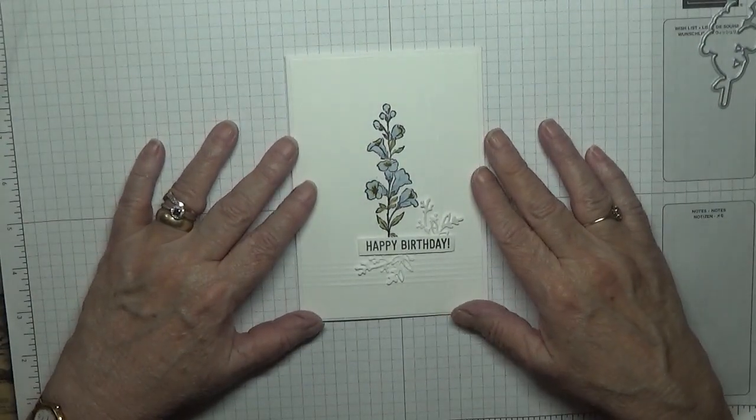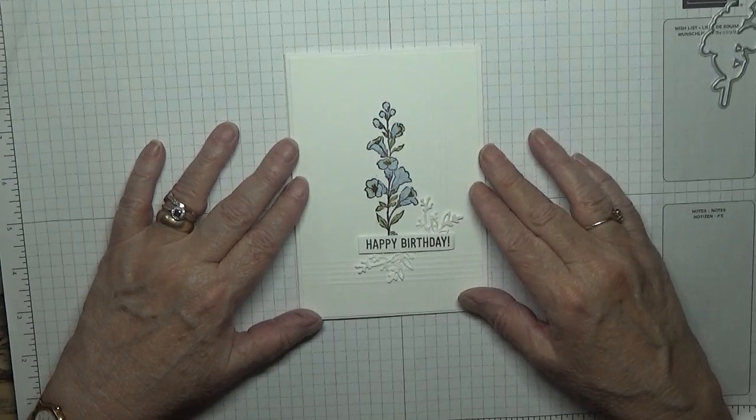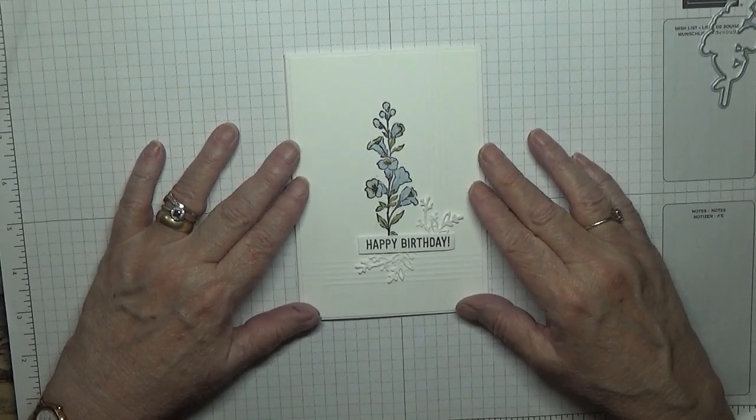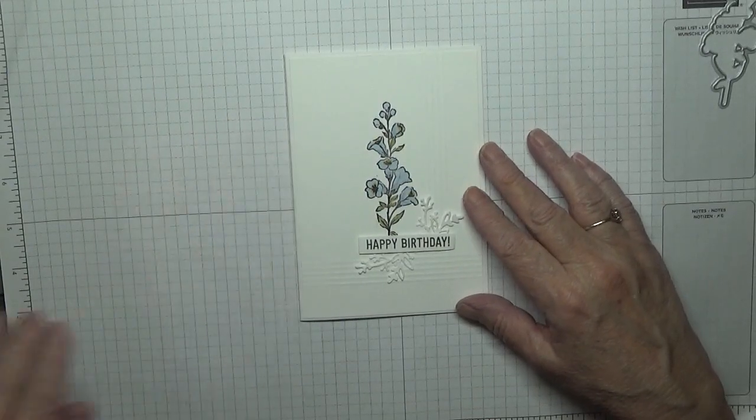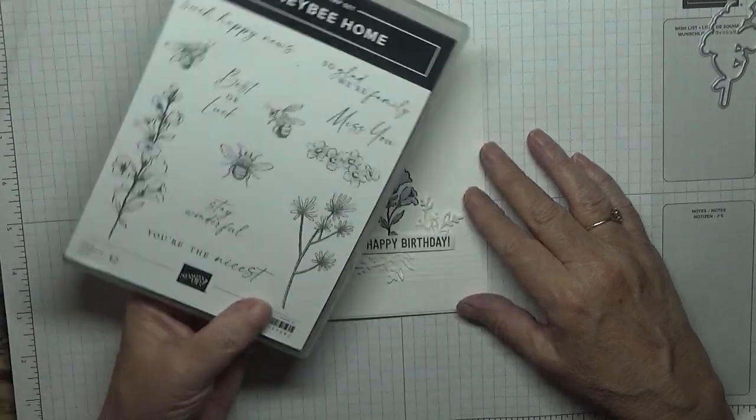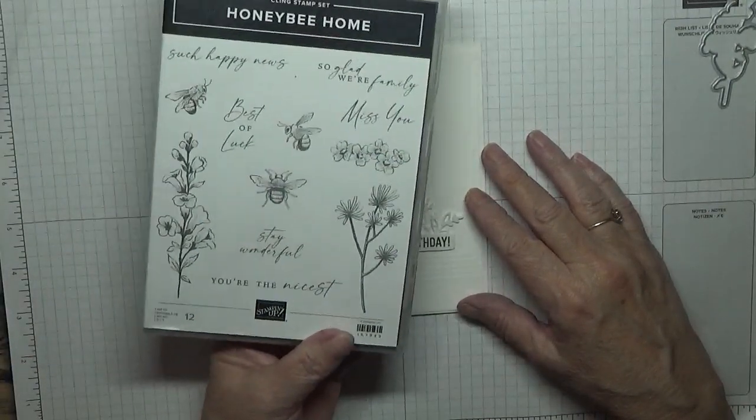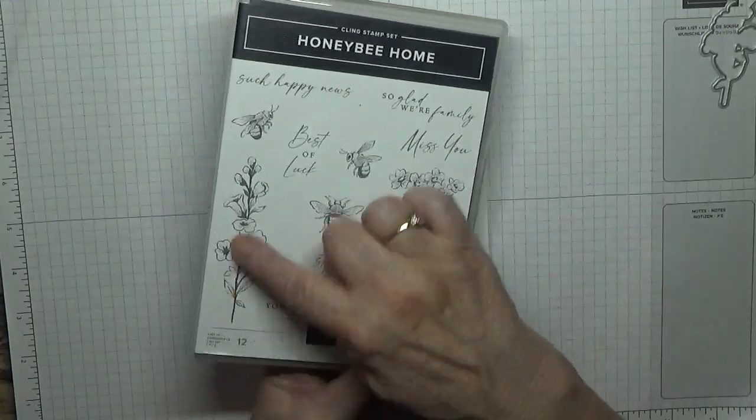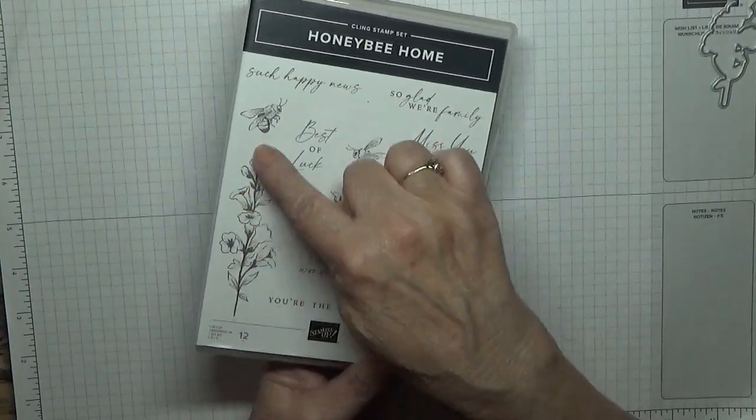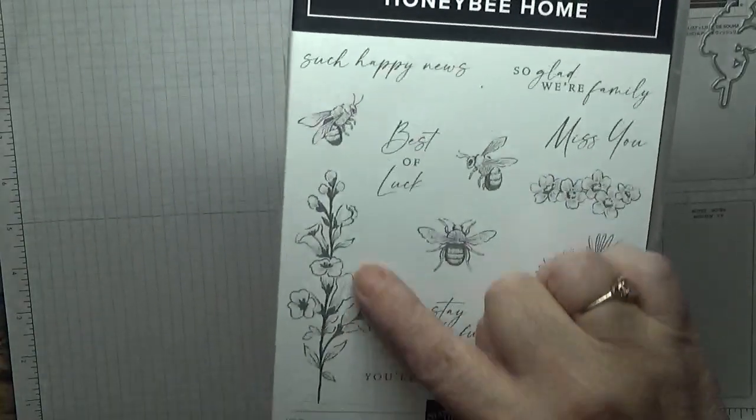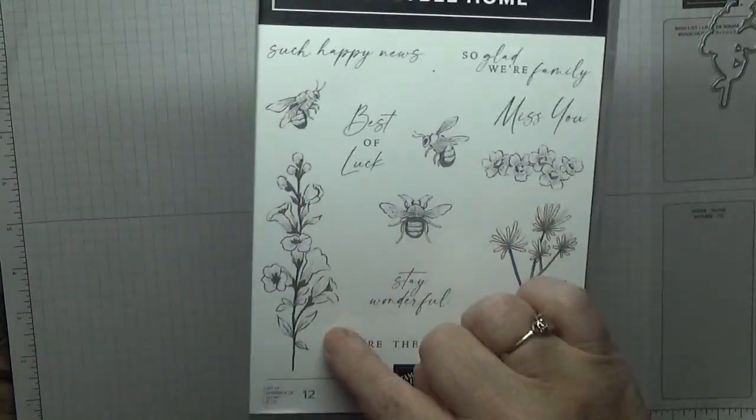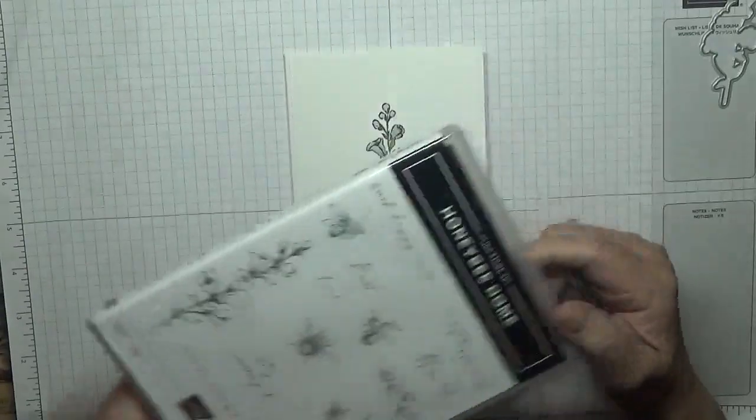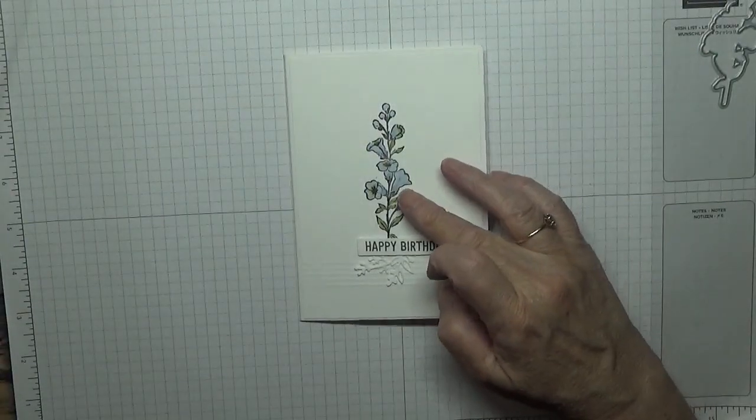Hello, Georgia B back again. Today I'd like to show you how I made this card using the stamp set Honeybee Home. It's in the new spring and summer catalog, and I'm only using this flower image. I don't know what kind of flowers they are, not poppy flowers, so that's what I'm going to use.